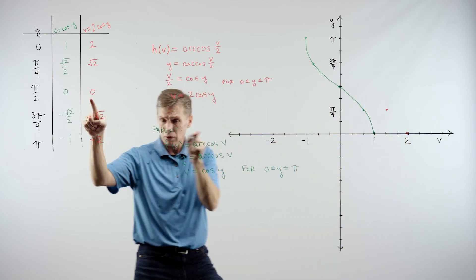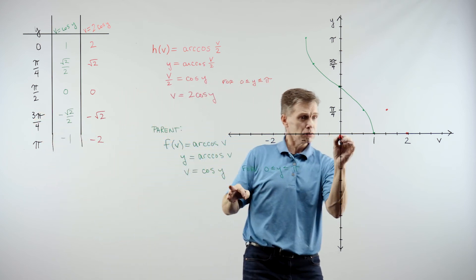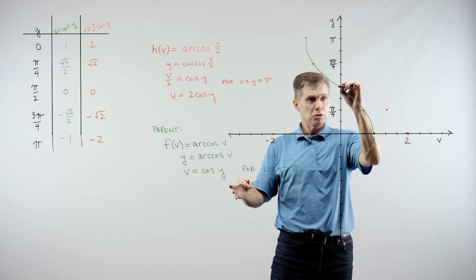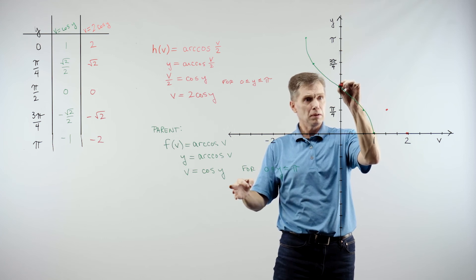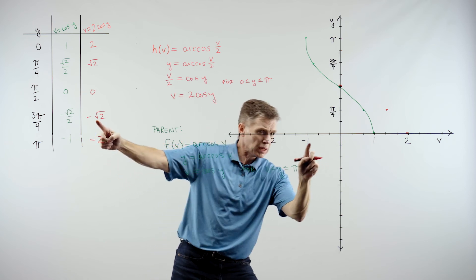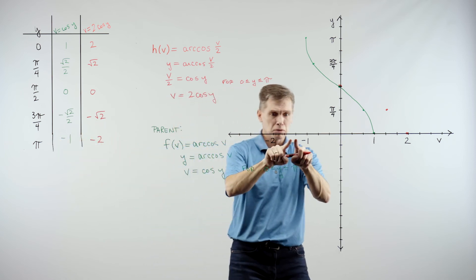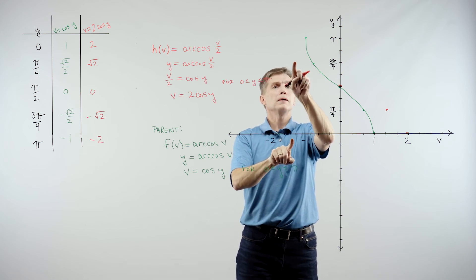0, right there. 0 on the horizontal, up pi over 2 on the vertical, 0, pi over 2, right there. Negative square root of 2, so negative 1.4-ish, and then 3 pi over 4, going up to about there.